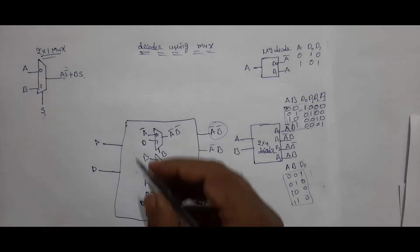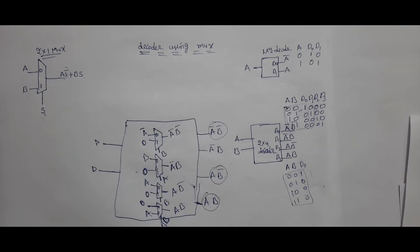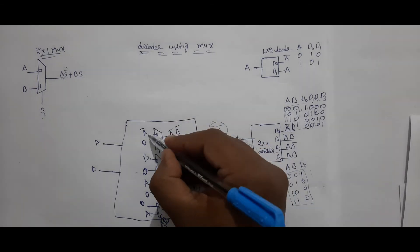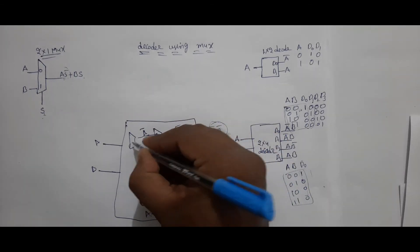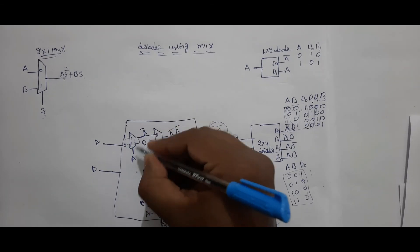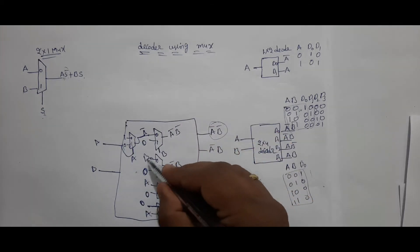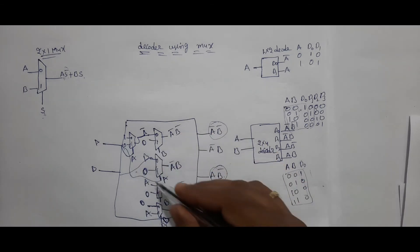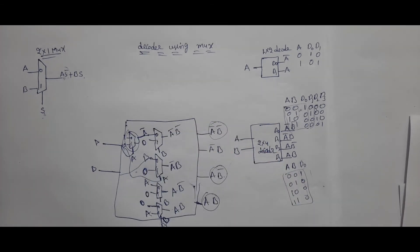How many 2x1 MUXes are required to implement a 2-to-4 decoder? The answer is not 4 — the answer is 5. Why 5? Because A-bar is needed, so one additional 2x1 MUX is required as an inverter — input 0 gives 1, input 1 gives 0. This output is connected where A-bar is needed. So totally, 5 2x1 MUXes are required to implement a 2-to-4 decoder.